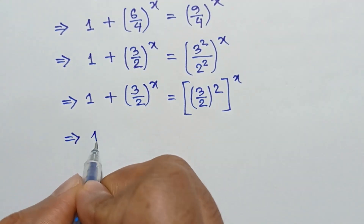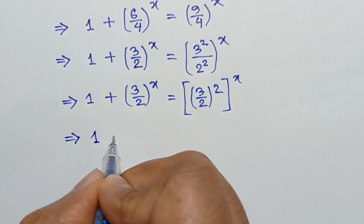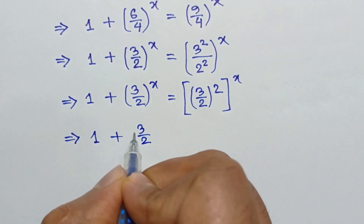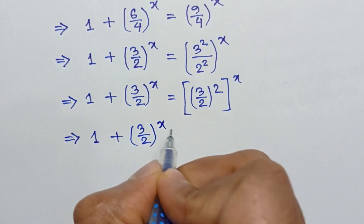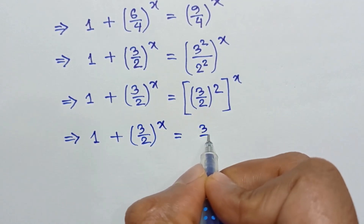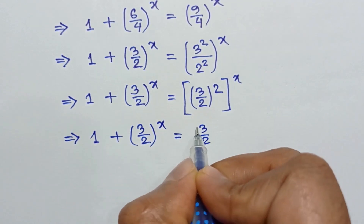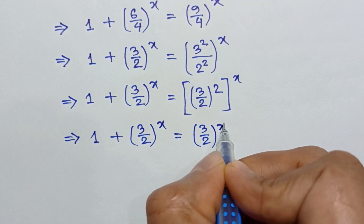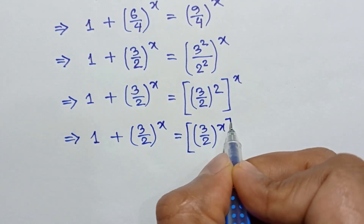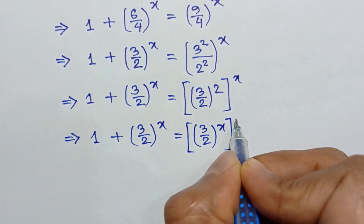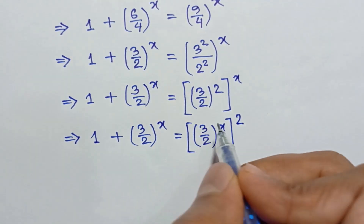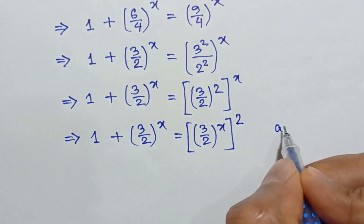So, 1 plus (3 over 2) to the power x equals (3 over 2) to the power x, whole squared. According to the exponent law, we let M equal (3 over 2) to the power x.